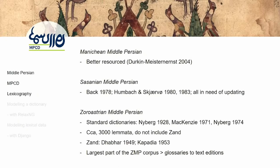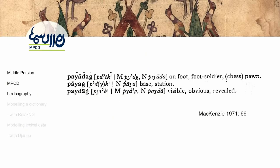There are also some dictionaries published in India and Iran that are not very good, and a lot of glossaries to individual texts of varying quality and varying standards. For example, the best dictionary of Middle Persian is MacKenzie's from 1971. The last word on the list is a very common one — apparently it means 'visible, obvious, and revealed' — but there's no information on part of speech, no information on how these meanings differ in usage. There's nothing except transcription, transliteration, an Avestan example, a New Persian example, and some census. This will not do, and we need to do better.